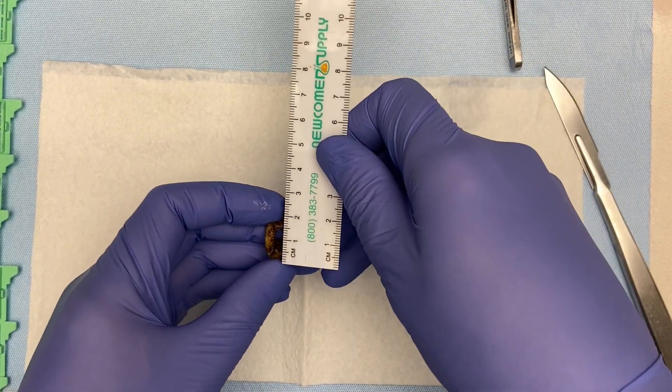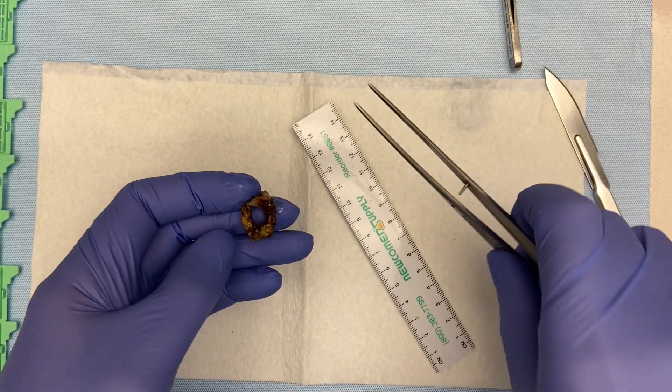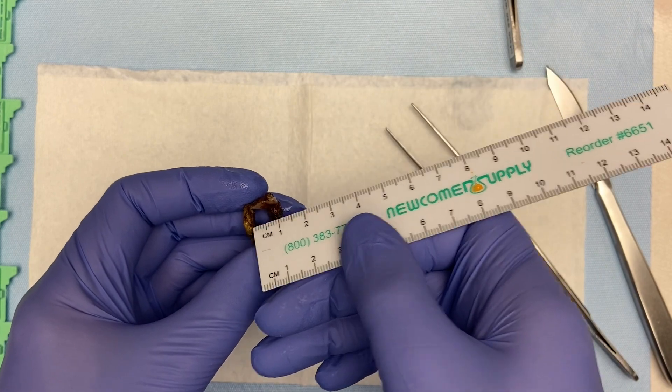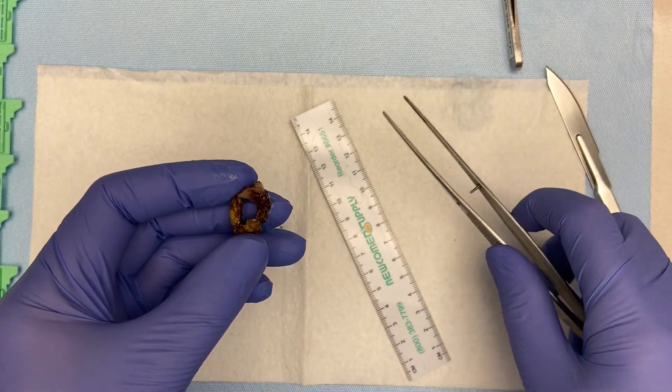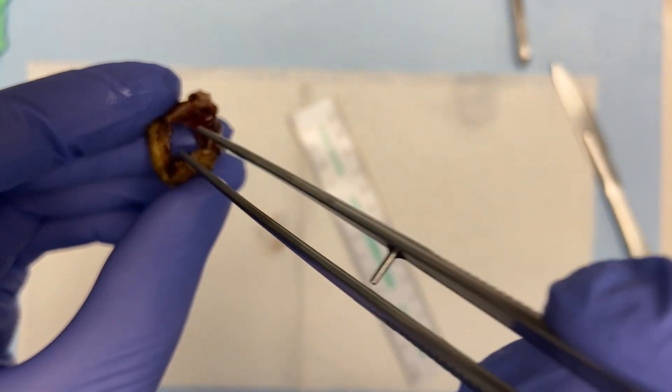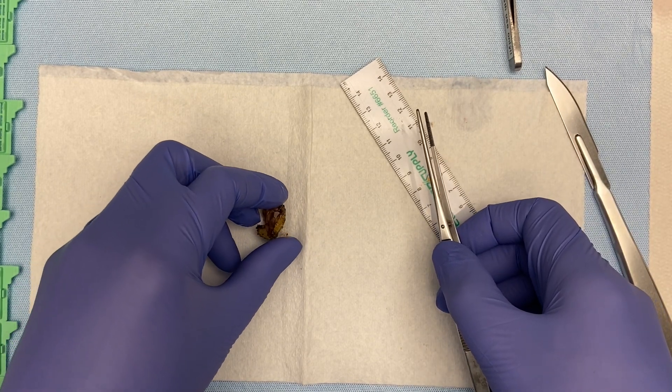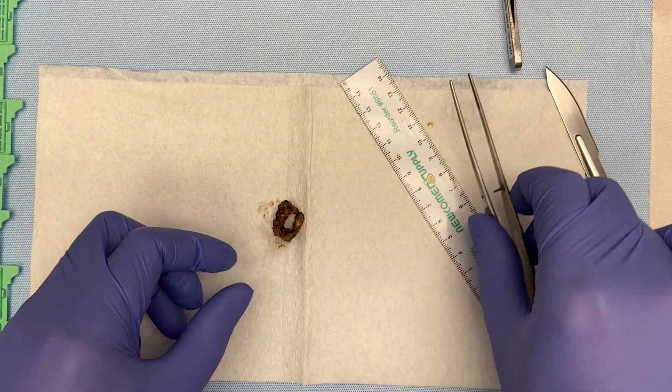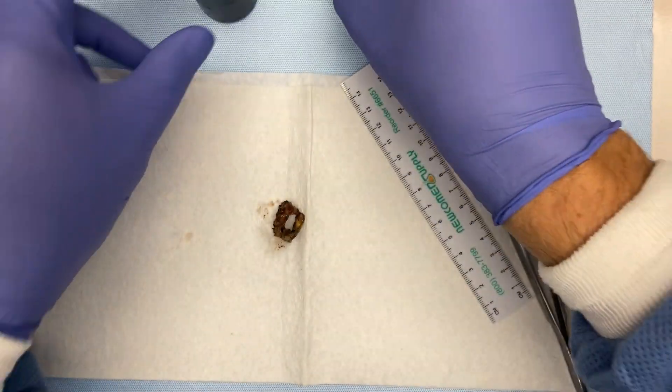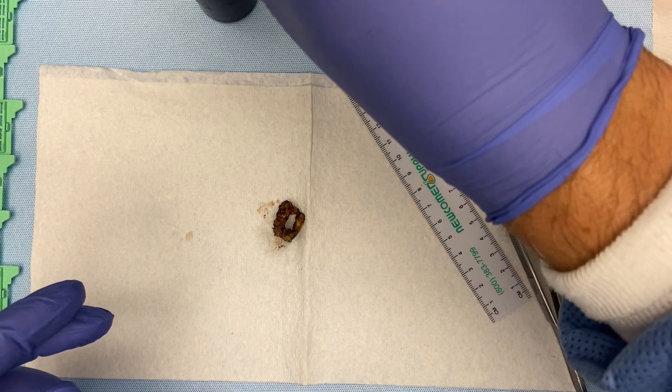This specimen is a 1.8 by 1.6 by 0.7 cm tan pink to brown annular soft tissue displaying a 1.0 by 0.7 cm central patent os. The specimen is partially surfaced by a tan pink, smooth glistening mucosa. The specimen is unoriented. The specimen is inked blue along the endocervical aspect, black along the ectocervical aspect and serially sectioned in a clockwise manner. The specimen is submitted in its entirety sequentially, in cassettes A1 through A12.